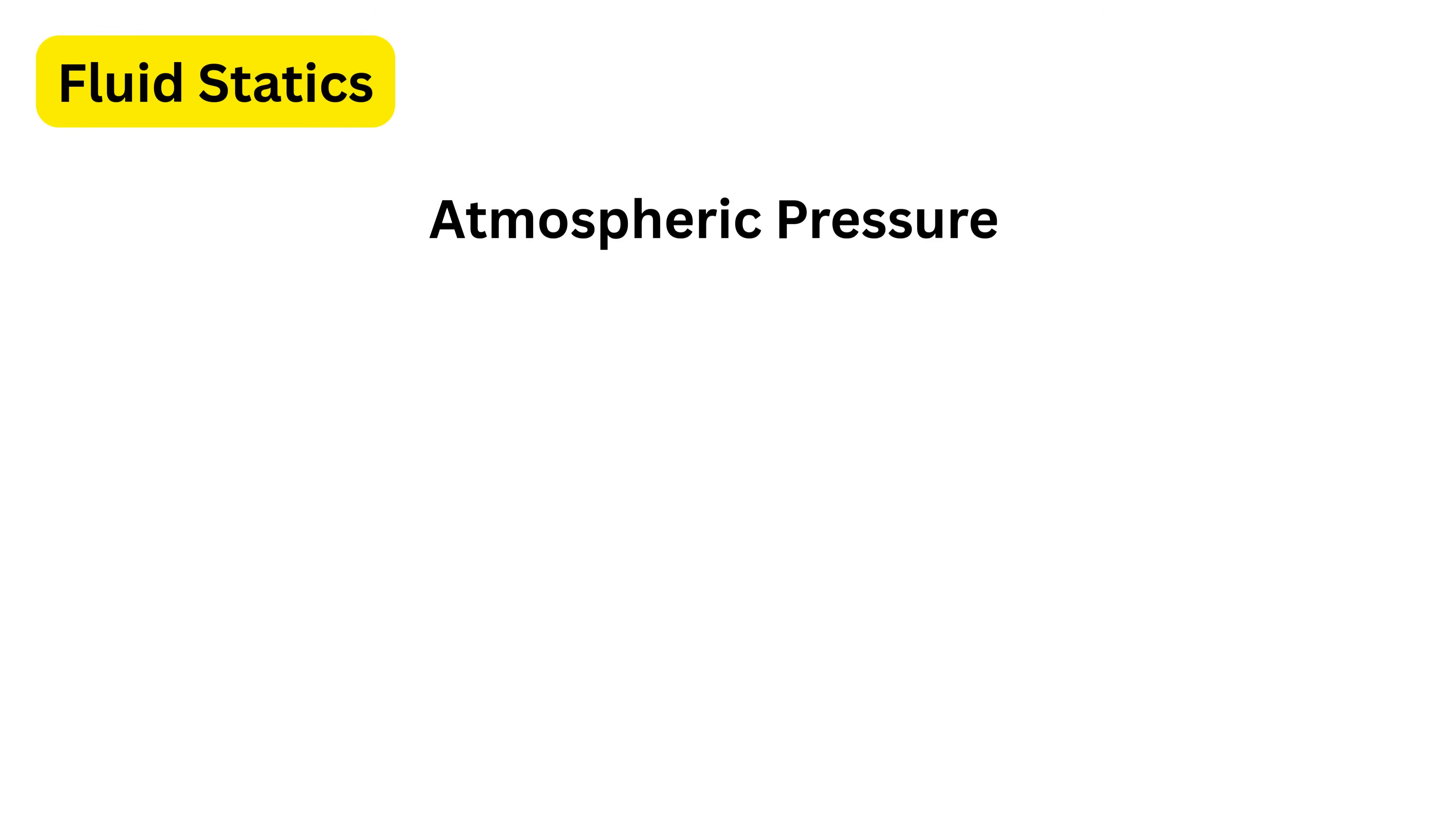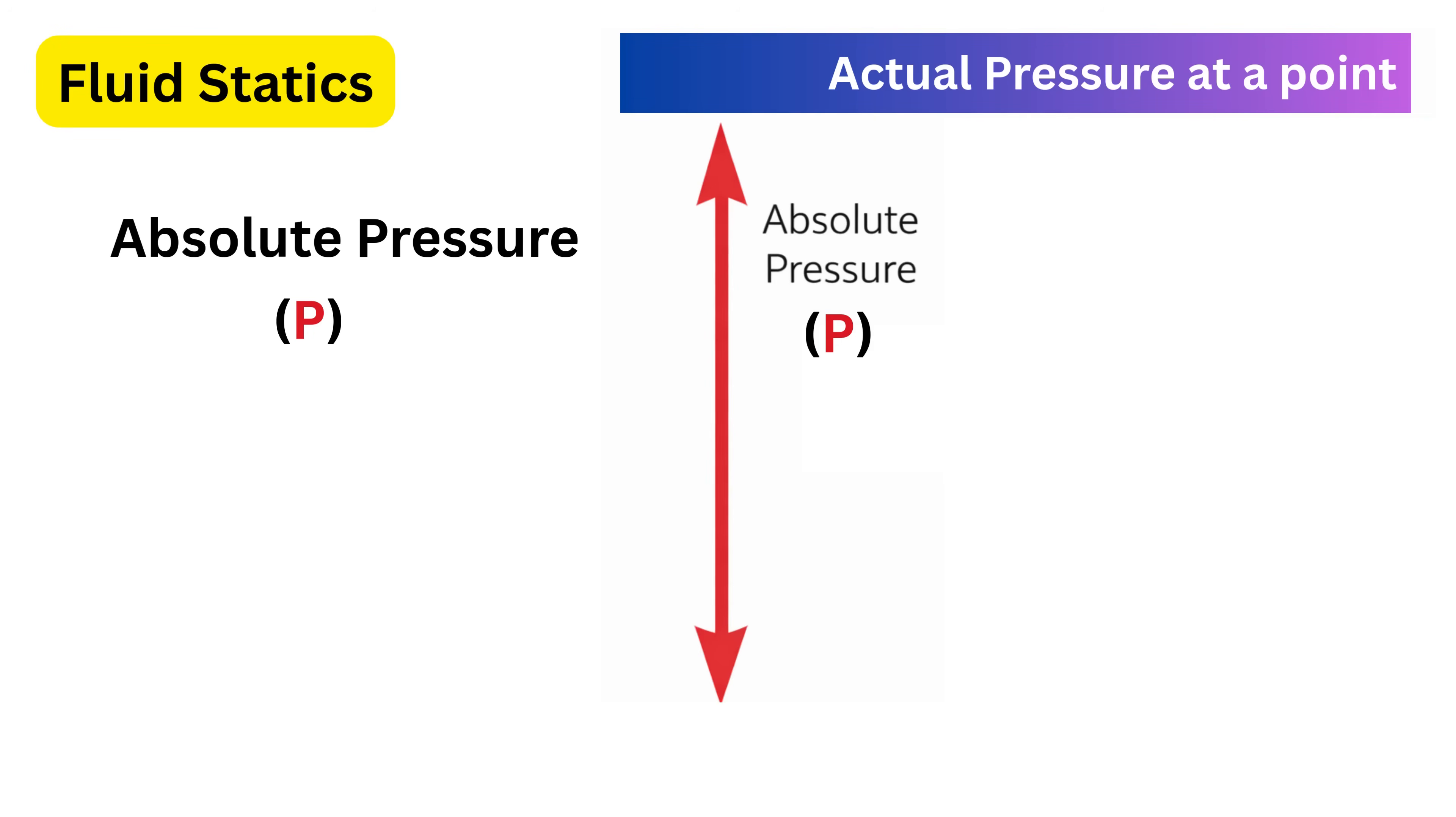Based on atmospheric pressure, we define two important types of pressure. One is absolute pressure. Absolute pressure is the actual pressure at a point, measured from a perfect vacuum as a reference.